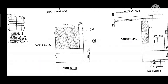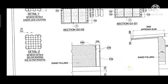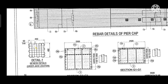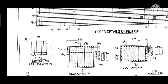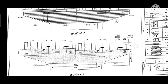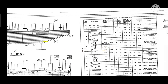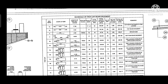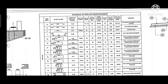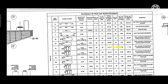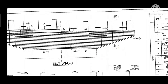Let's look at the schedule of the bar and then we will see every drawing. This is the schedule of the PRC reinforcement. First, the bar mark is given, the shape of the bar is given, the length of the bar is given, the spacing, and the total length of the bar — everything is given in the schedule of the reinforcement.